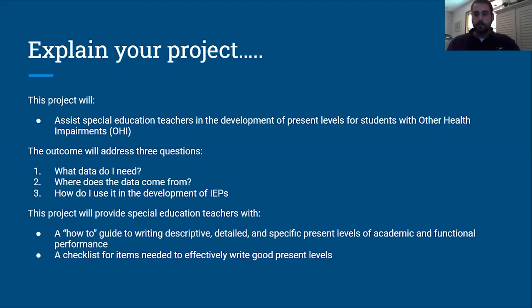This is going to provide special education teachers with a how-to guide in writing a good, descriptive, detailed, and specific present levels of academic and functional performance for students with OHI. I also hope to generate a checklist of items that are needed to effectively write these present levels.